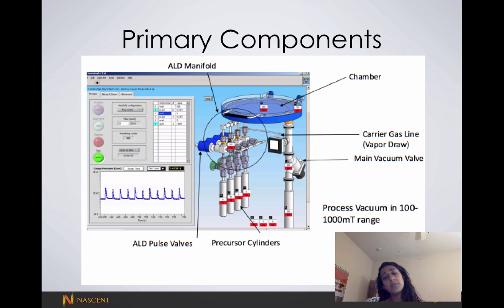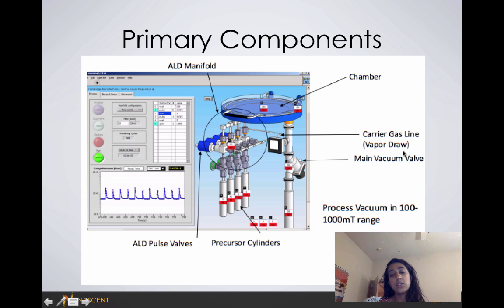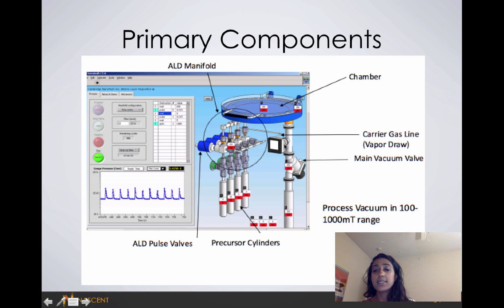Here are the primary components of an ALD reactor. Here we have our precursors — our reactants. This is our chamber, where you would load your sample. Here is the carrier gas line; we run all of our precursors or reactants using inert gas like nitrogen.